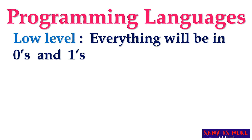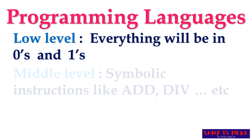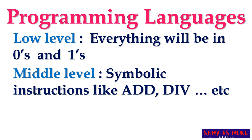Low level language means the computer can only understand zeros and ones — binary digits. Middle level language supports some symbolic instructions, like 'add' for addition, 'div' for division, and 'load' for loading data. There are symbolic instructions we can use in the program.